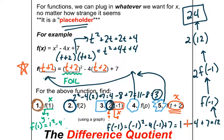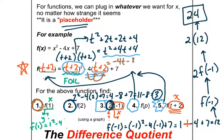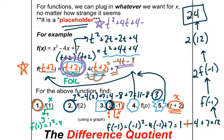That was just the squared piece. Now the next piece is negative 4 times (t+2). That negative 4 can distribute in — that's legal. That gives negative 4t minus 8. And then we have a plus 7 at the end. So putting the whole thing together in purple: t squared plus 4t plus 4, plus (negative 4t minus 8), plus 7.